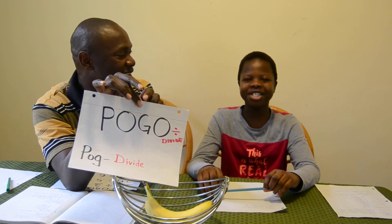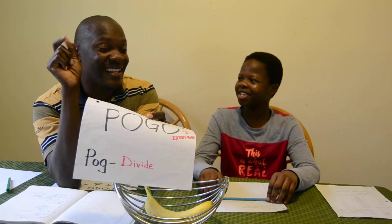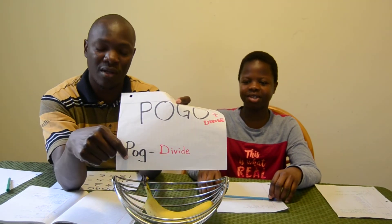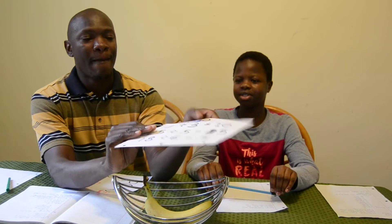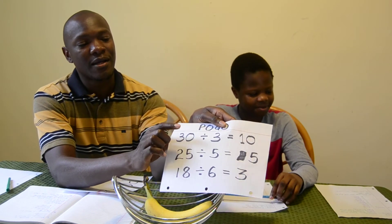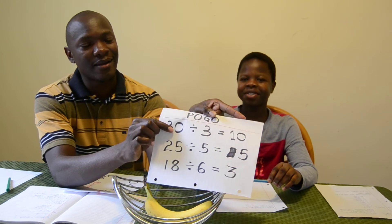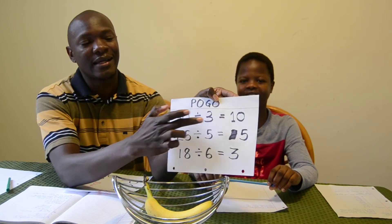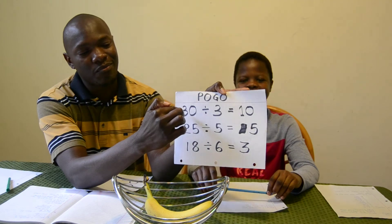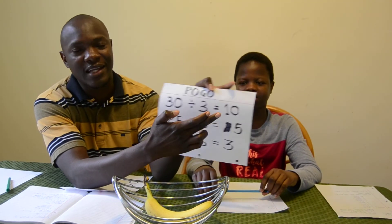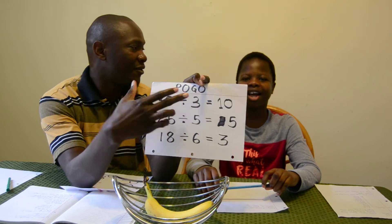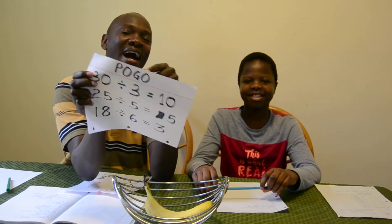'Pogo, pogo, pogo, pogo.' So we shall do this example: 'pogo pradek de adek' — divide 30 by 3 — and get what? 'Apar.' Correct! So 'pogo' is the word for divide.